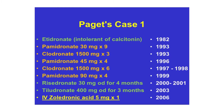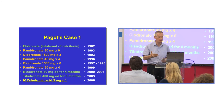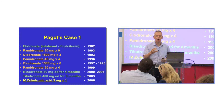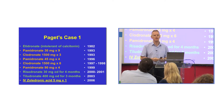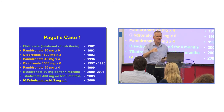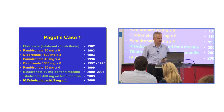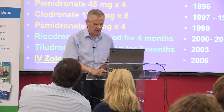He first had a treatment called etidronate, which is a tablet and the first bisphosphonate drug used for Paget's disease. Then he gets a series of intravenous treatments: pamidronate, clodronate, more pamidronate. Then he got two courses of tablets — two months at a time — of risedronate. Then another tablet called tiludronate. And then lastly, he gets the magic potion, which is intravenous zoledronic acid.